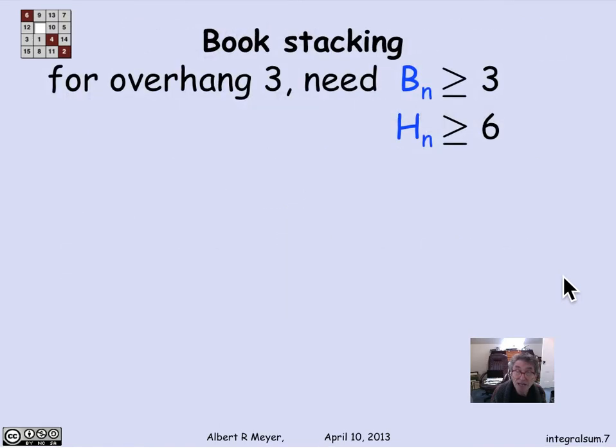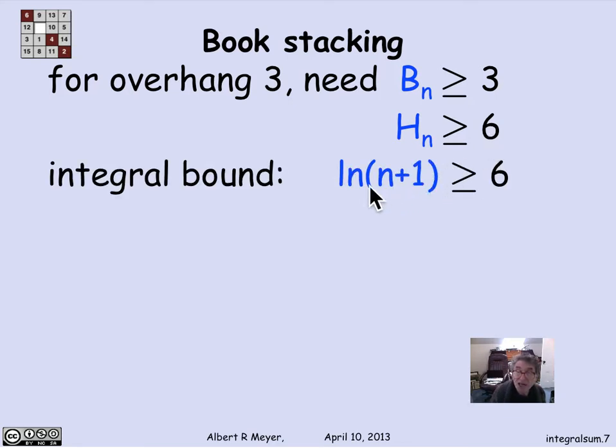So there we have it. The overhang that you need for three books, which is B_n greater or equal to 3, means that H_n has to be greater or equal to 6. So by this estimate, I need log of n plus 1 greater or equal to 6 in order to get three books out. The back end of the top book is two books past the edge of the table, and the right-hand end of the furthest out book is three book lengths past the edge of the table. My bound tells me that I need n books such that log of n plus 1 is greater or equal to 6.